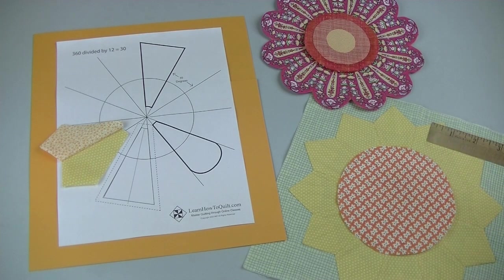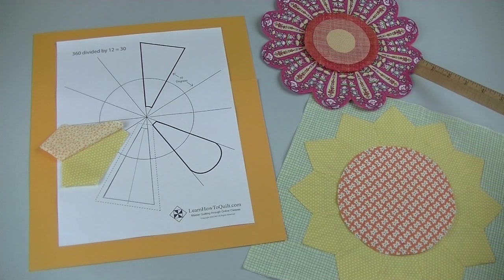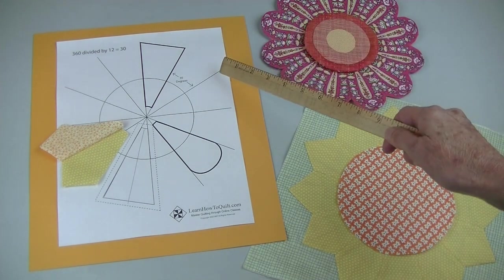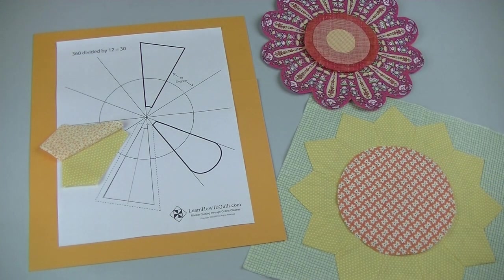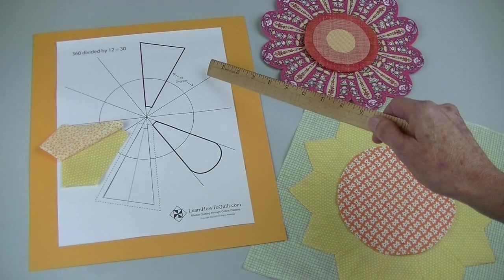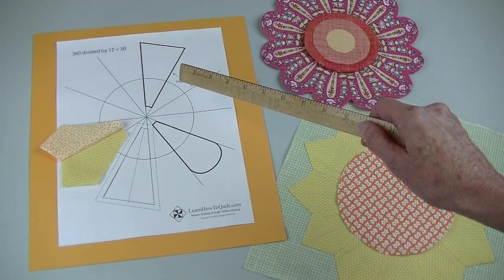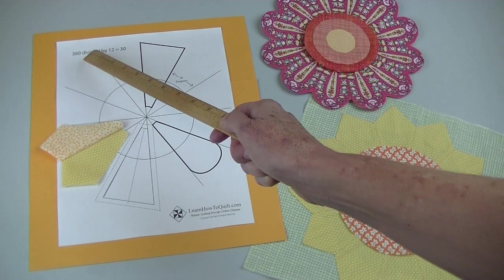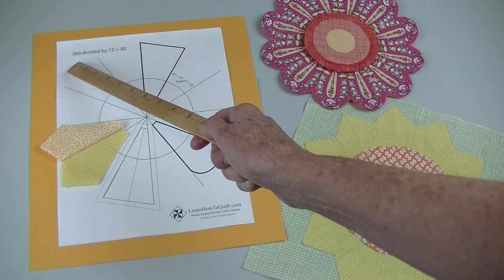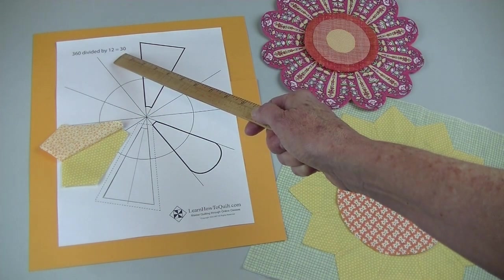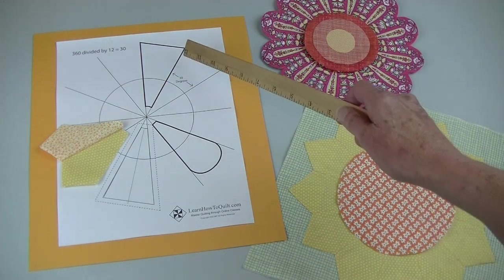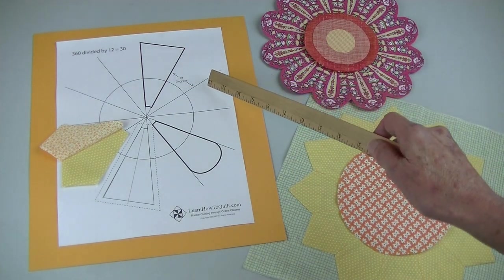In this video you'll make Dresden flowers with 12 wedges made from 30 degree angles. By now you might have figured out how this angle size varies. A circle has 360 degrees. Figure out how many wedges you want and then divide 360 by this number to get the angle of each wedge. So in our project the angle will be 30 degrees.